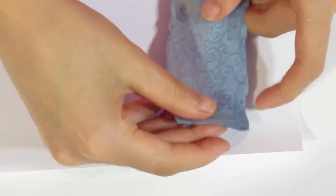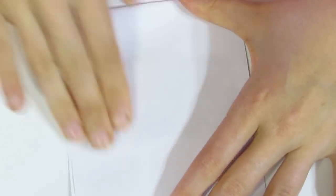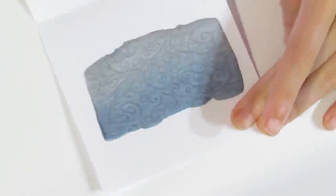Lift that up. Bring over your paper again. Place it down. I'm going to fold that paper over and burnish it again so that both sides now will have a nice clean texture on the back. There we go.